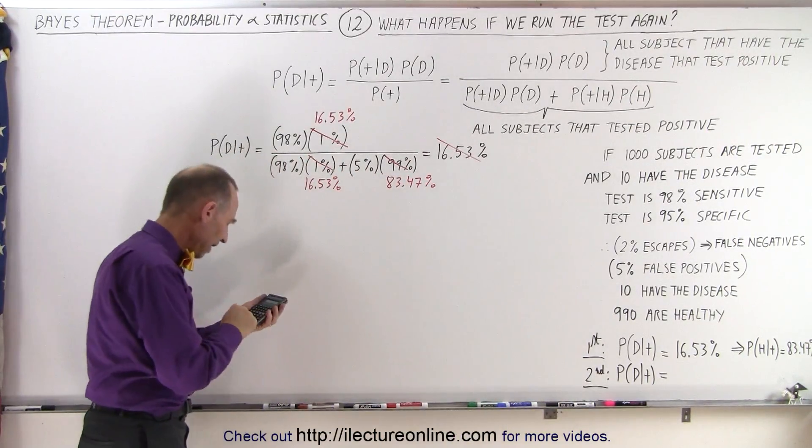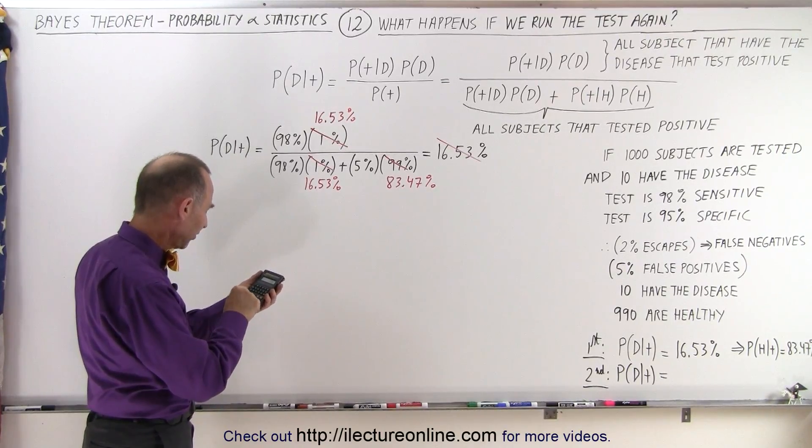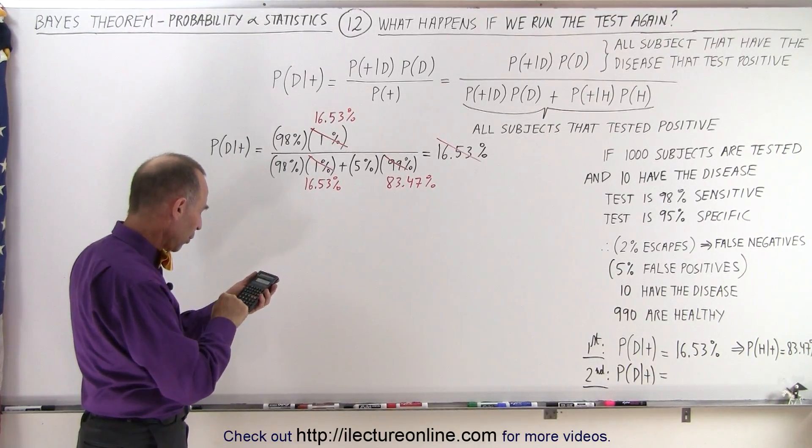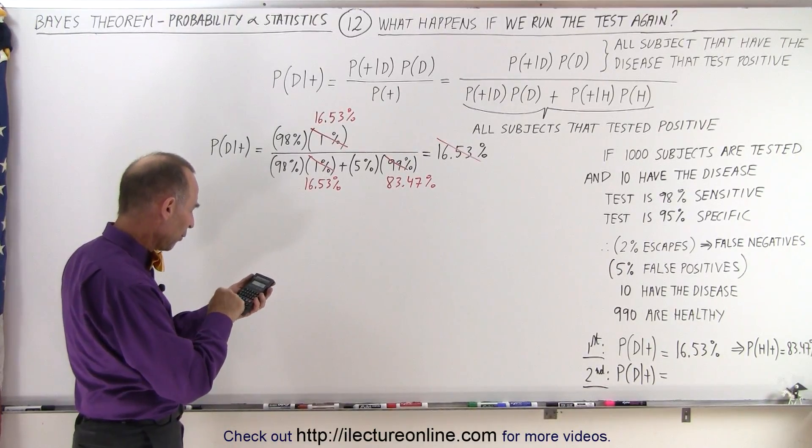In the denominator, we have 0.98 times 0.1653 plus 0.05 times 0.8347.